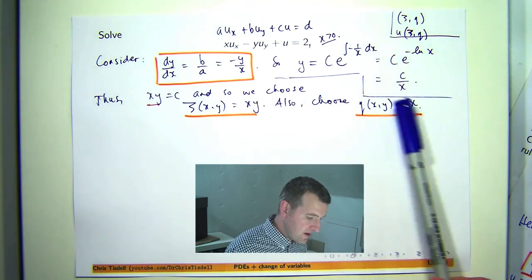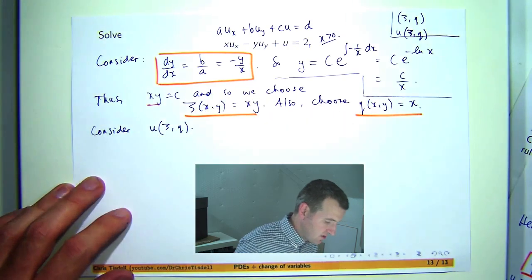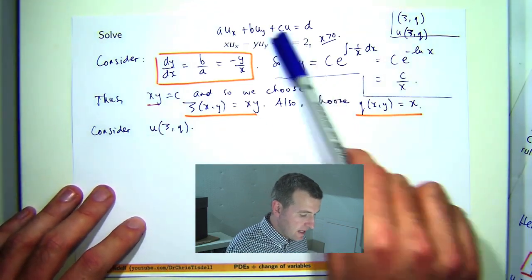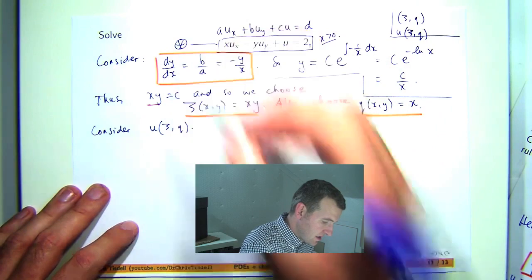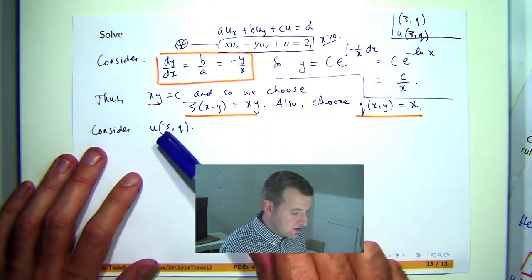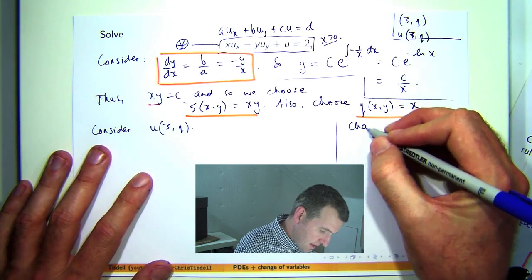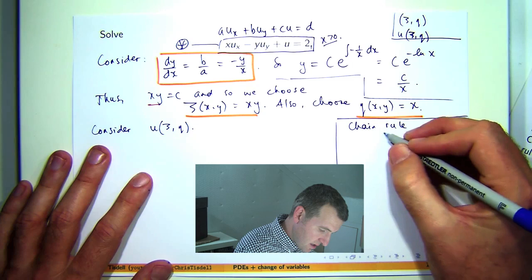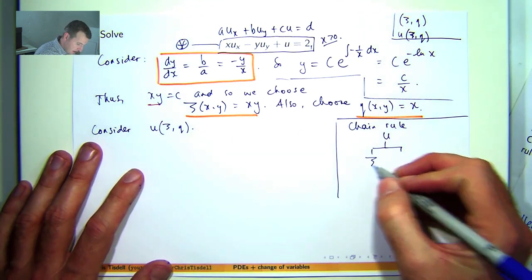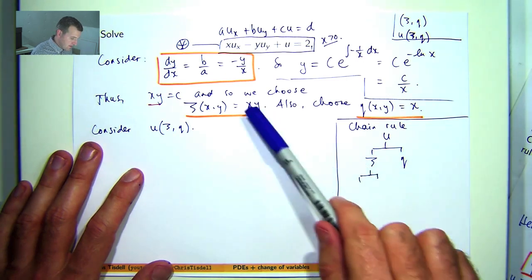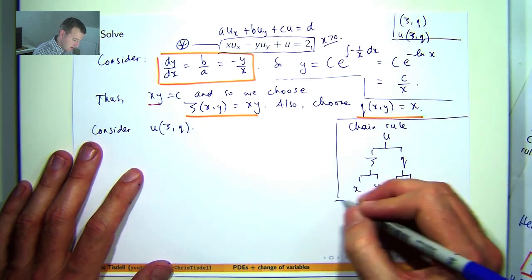So what we're going to do with these new variables then is to consider u as a function of these new variables. We're going to calculate u sub x and u sub y, plug them into the differential equation and you'll see some simplification. Now in order to compute u sub x and u sub y, we need a chain rule. So now I like to draw little functional relationships. So u depends on psi and eta, psi depends on x and y, and eta depends on x and y. In this case it's just x but I'm just going to put x and y down.